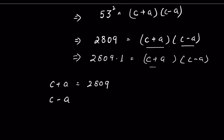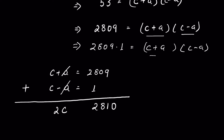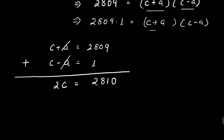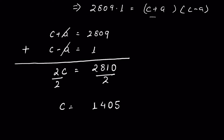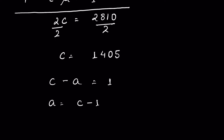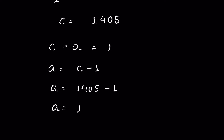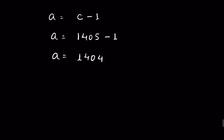Now we add these two equations: 2809 plus 1 equals 2810. The 'a' terms cancel, giving 2c equals 2810, so c equals 1405. If c is 1405 and c − a equals 1, then a equals c − 1, which is 1405 − 1, so a equals 1404.